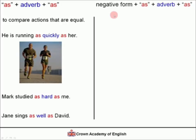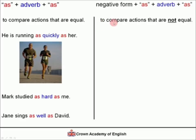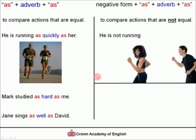In the negative, we put the verb in the negative form, followed by 'as', plus the adverb, plus 'as'. This structure compares actions that are not equal. He is not running as quickly as her — this means she is running more quickly than him, and he is running more slowly than her.